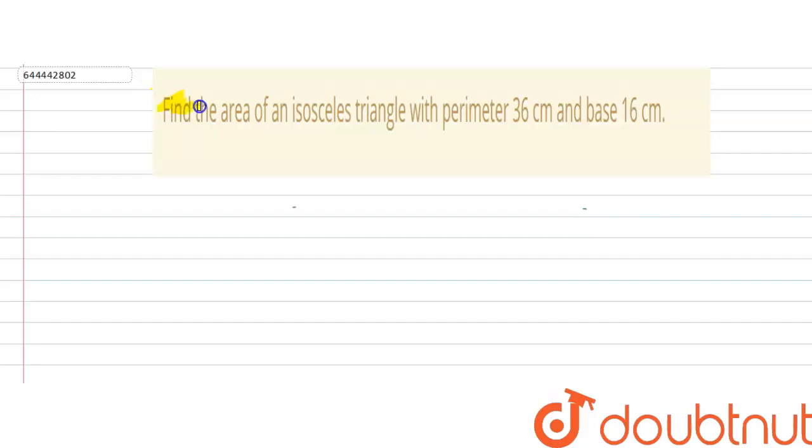In this question we need to find the area of an isosceles triangle with perimeter 36cm and base 16cm. Let's start this question by first drawing the figure. This is triangle ABC.